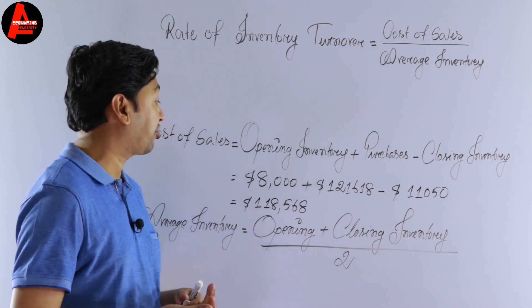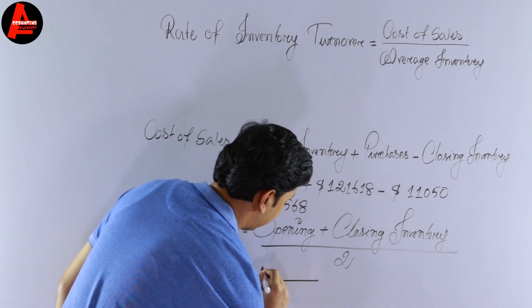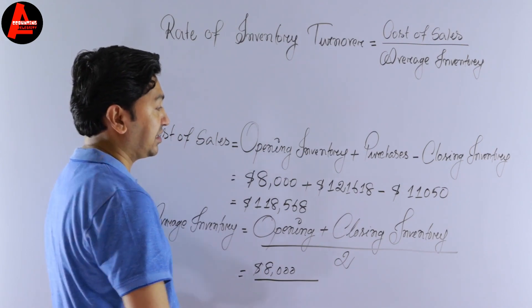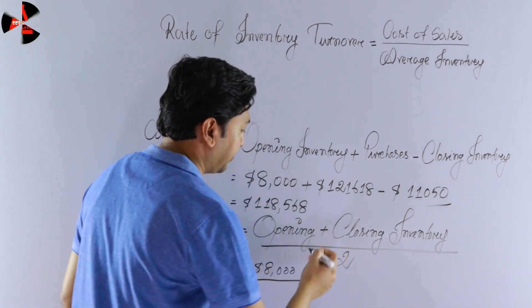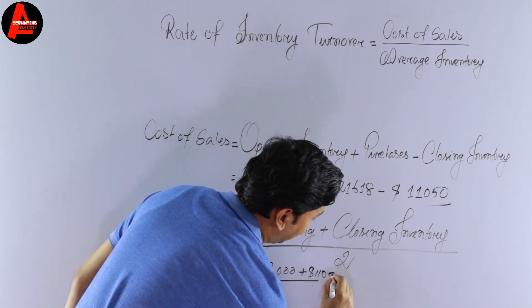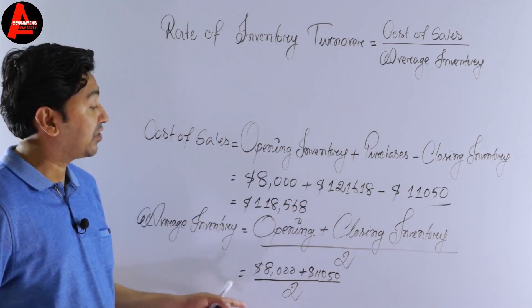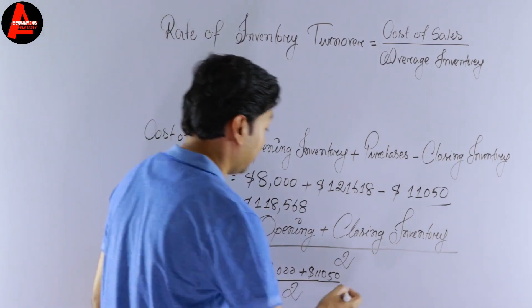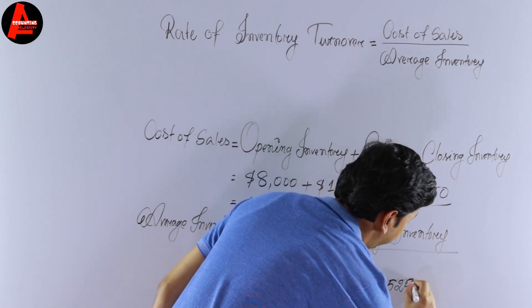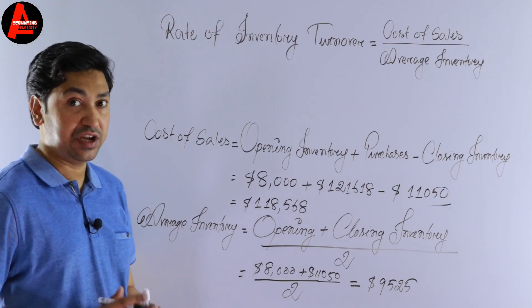Opening inventory is $8,000 and closing inventory is $11,050. Adding these and dividing by 2, our average inventory is $9,525.